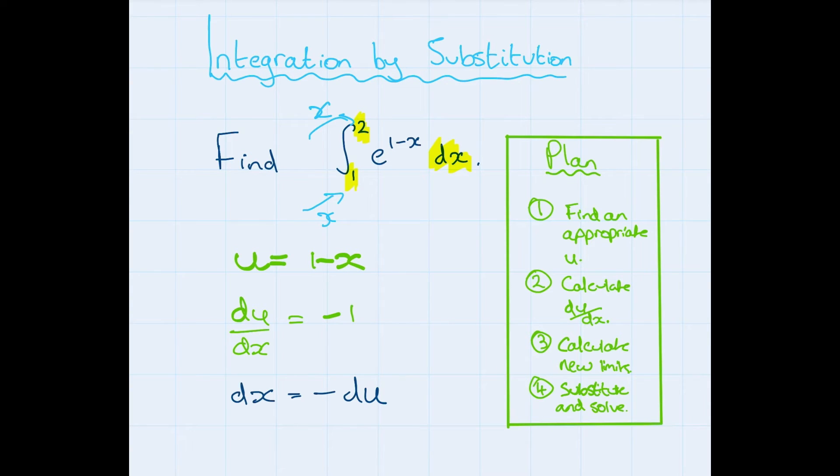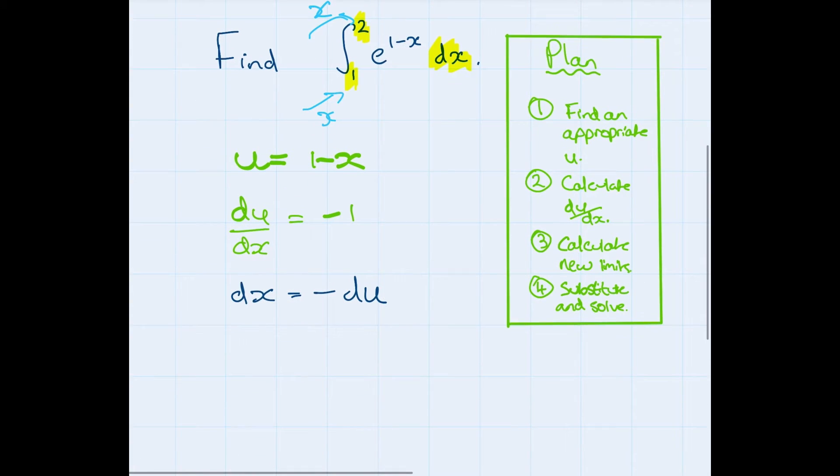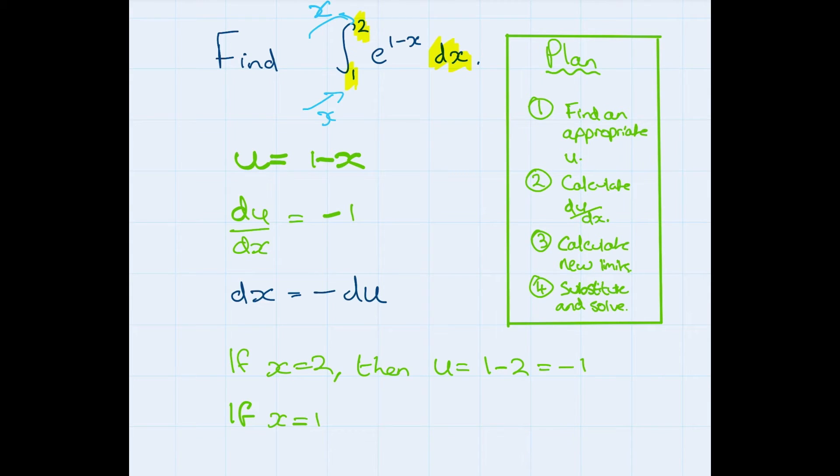Okay, so where do we go from here? Well we now know that u equals 1 minus x, we now know that dx equals minus du. We need to now calculate the new limits. So if we have x equals 2, then u equals 1 minus 2 which equals minus 1. And if x equals 1, then u equals 1 minus 1 which equals 0.